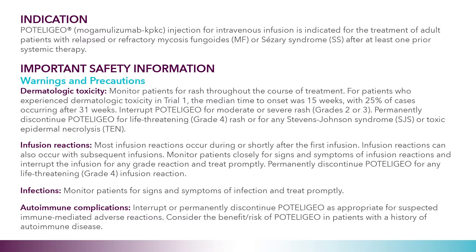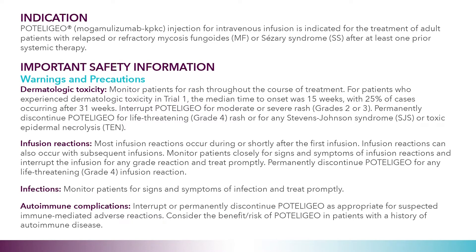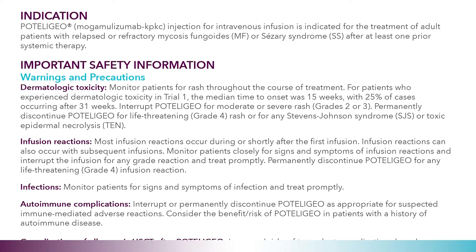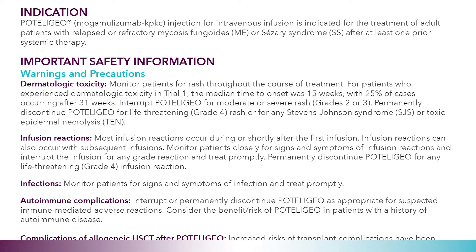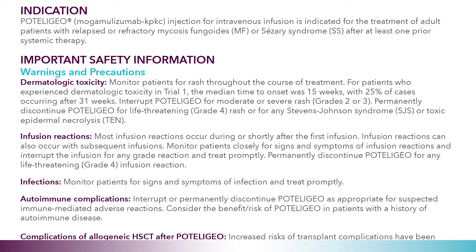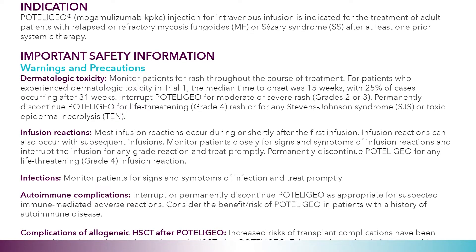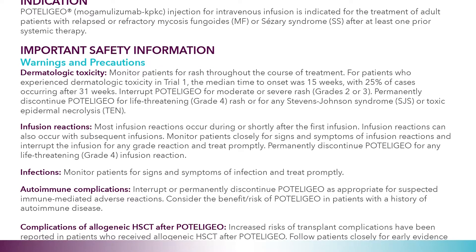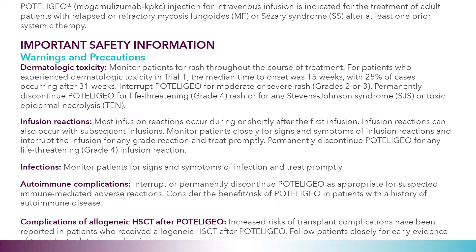Important safety information — warnings and precautions. Dermatologic toxicity: Monitor patients for rash throughout the course of treatment. For patients who experienced dermatologic toxicity in trial 1, the median time to onset was 15 weeks with 25% of cases occurring after 31 weeks. Interrupt Poteligio for moderate or severe rash, grades 2 or 3. Permanently discontinue Poteligio for life-threatening grade 4 rash or for any Stevens-Johnson syndrome (SJS) or toxic epidermal necrolysis (TEN).